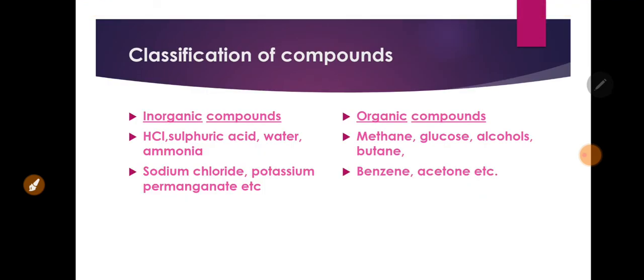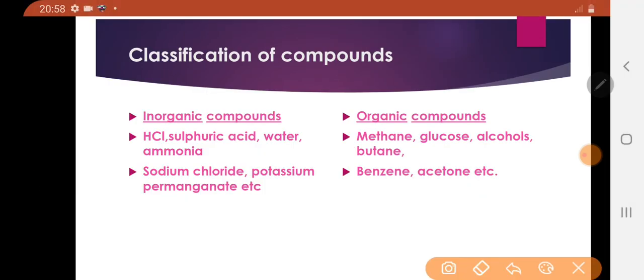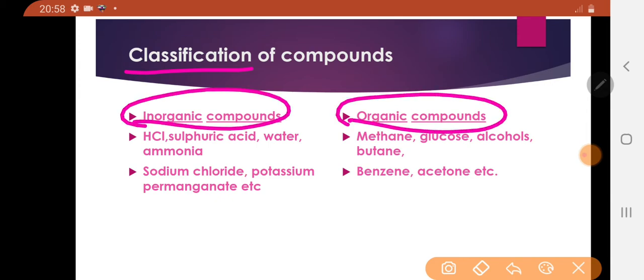Next part of the chapter is classification of compounds. Compounds can be classified into two types: one is inorganic compounds and another is organic compounds. Inorganic compound examples: HCl, sulfuric acid, water, ammonia, sodium chloride, potassium permanganate, etc.